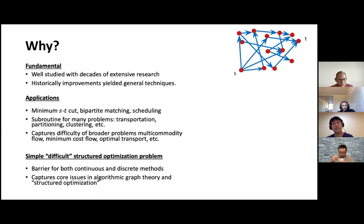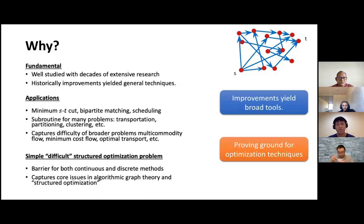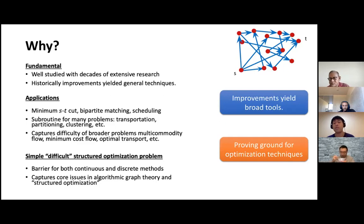Our goal is to maximize the amount of ST flow, which is equivalent to the amount of flow leaving vertex S. This problem has a long history and several applications, including minimum ST cuts, bipartite matching, and scheduling problems. There are also generalizations such as minimum cost flows, which have applications like optimal transport. Getting improvements has eluded both discrete and continuous methods, and whenever improvements have been made, it has led to tools applicable to other problems — for example, work of CKMST in 2011 gave improved algorithms for regression problems like L-infinity, L1, and LP regression.